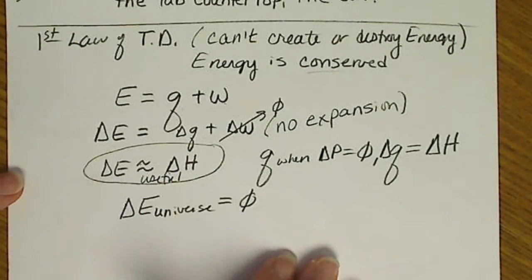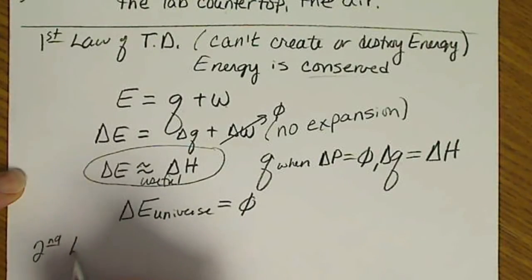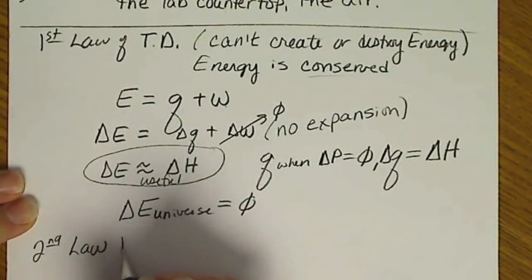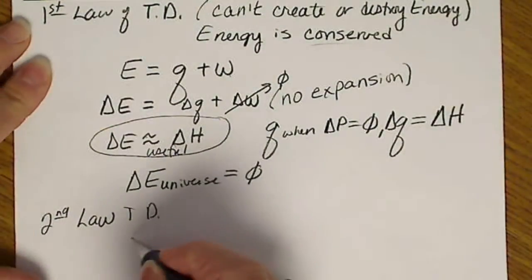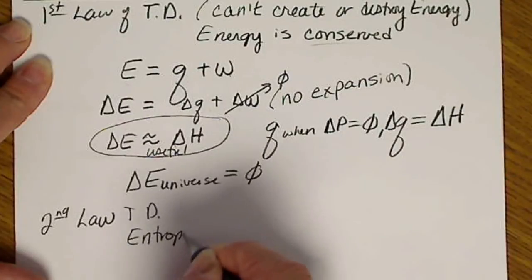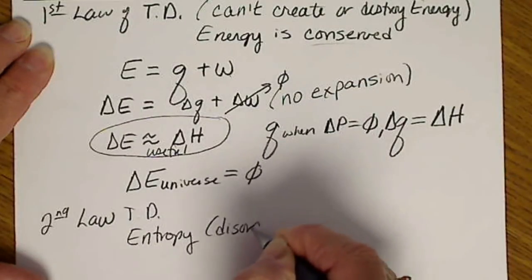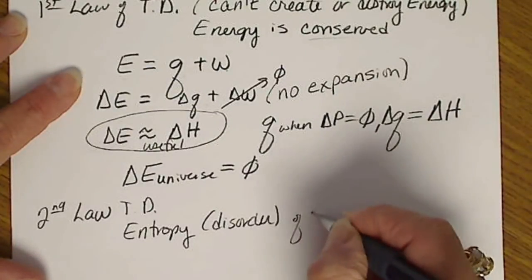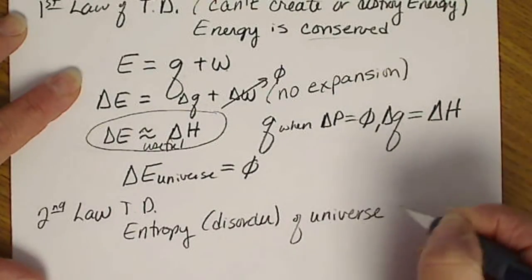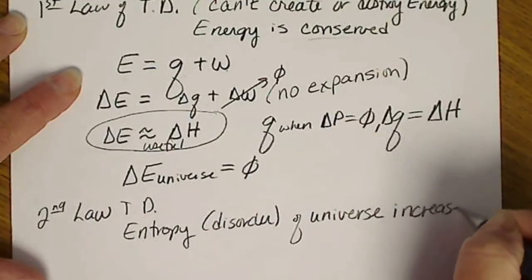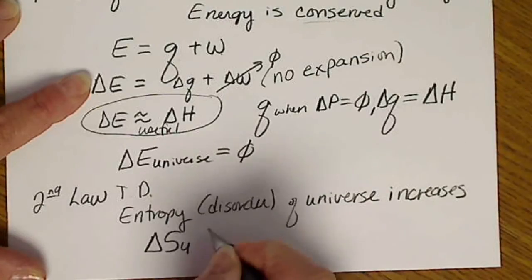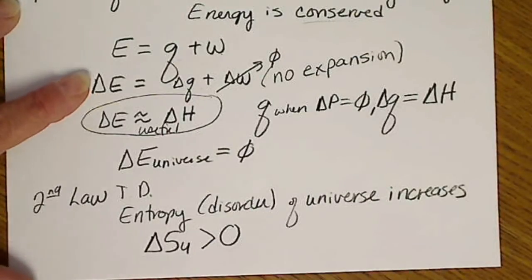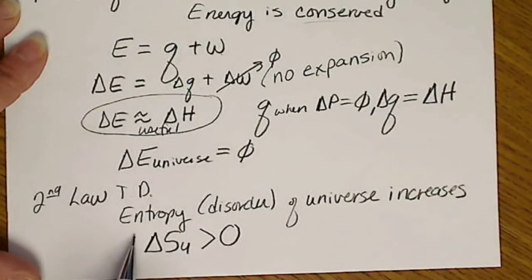The second law of thermodynamics that we're going to look at has to do with entropy or disorder. And the second law states that entropy or disorder of the universe is always increasing. And we would write this as the change in entropy in the universe is always a positive number. It's always greater than zero. So we'll be talking a great deal about this entropy term, S.